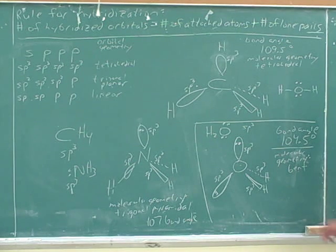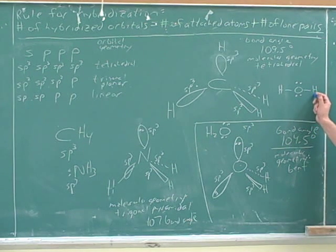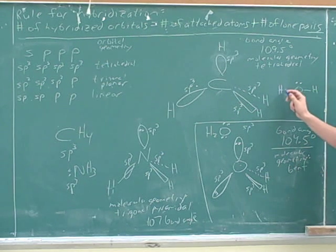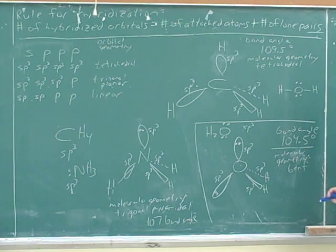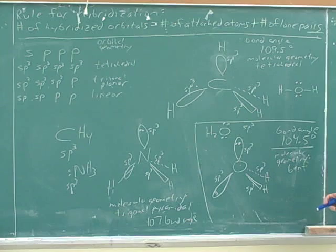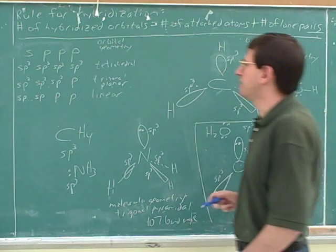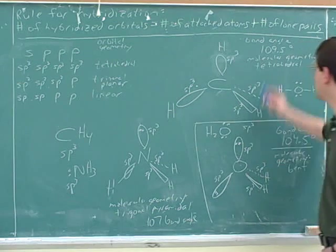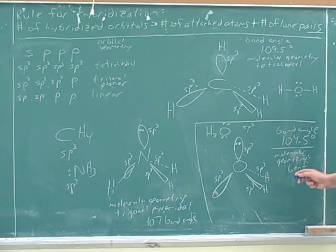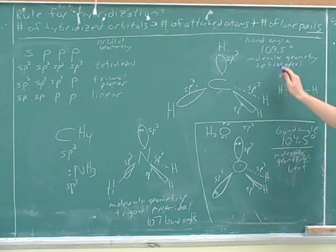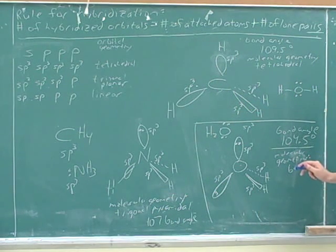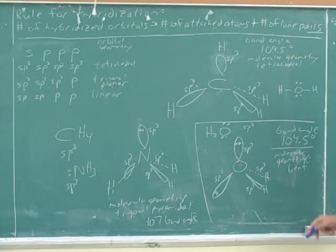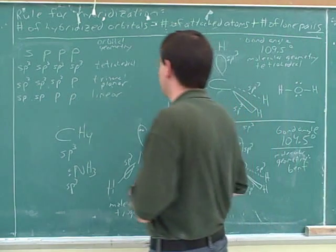This is important because it means that these two bond dipoles don't cancel each other out, so water is a polar molecule. If water was linear, these two dipoles would cancel each other out and would not be a polar molecule, and that would change a lot of stuff. Okay, good. So we have to remember that when the orbital geometry is tetrahedral, there's three different types of molecular geometry. It could be tetrahedral molecular geometry, trigonal planar molecular geometry, or bent molecular geometry. So people tend to get those things confused with each other.